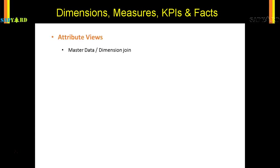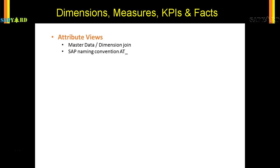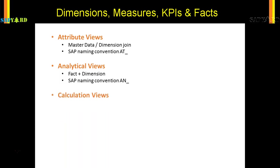In attribute views, we usually do joins of the dimensions — that means joining the material with the material text, vendor with vendor names. Those are master data or dimension data. SAP's naming convention for attribute views is 'AT_'. Analytical views are a combination of fact and dimension — fact meaning the transaction data and dimension meaning the master data. Together they give us the analytical view, and the naming convention is 'AN_'.